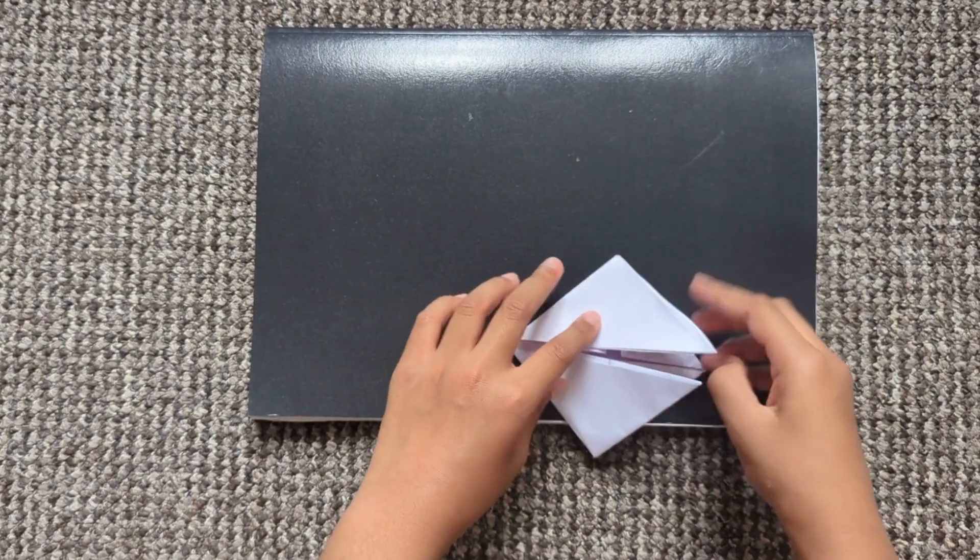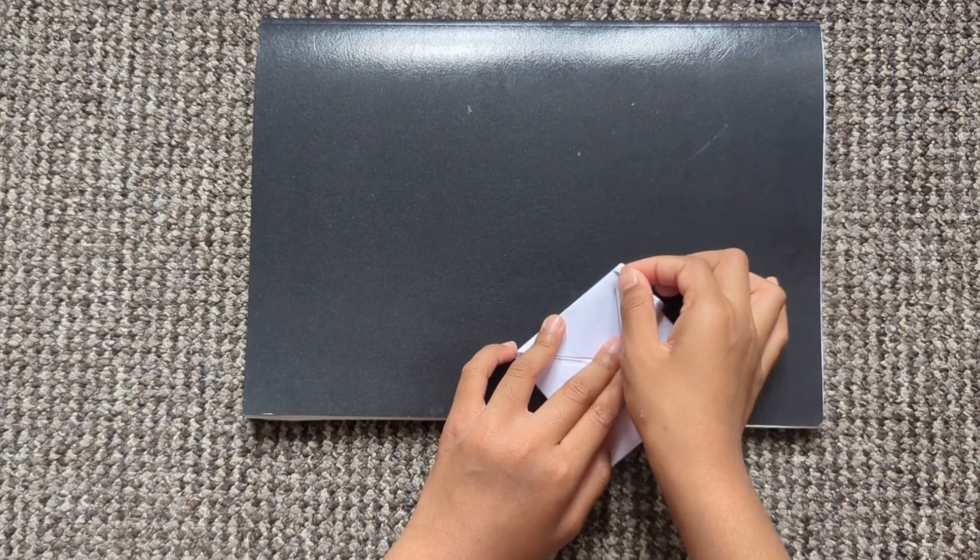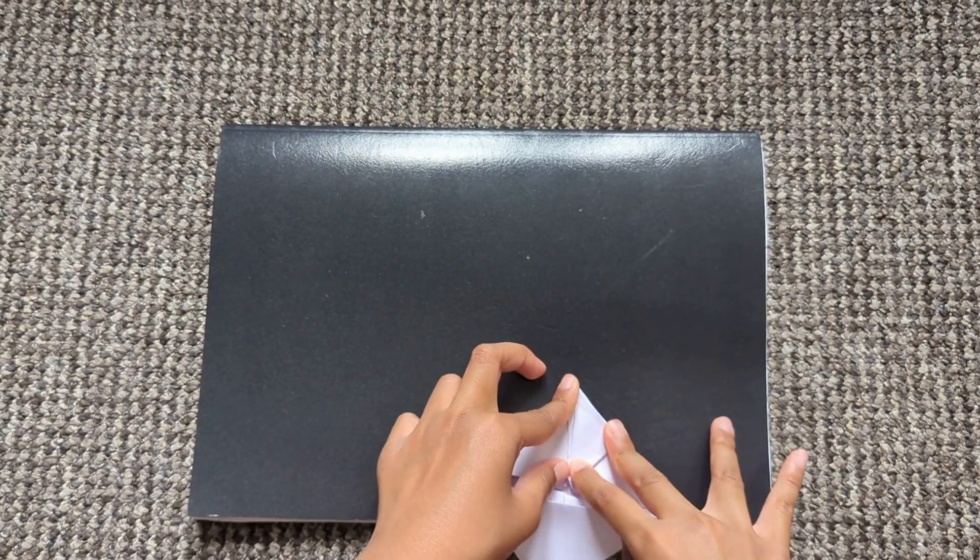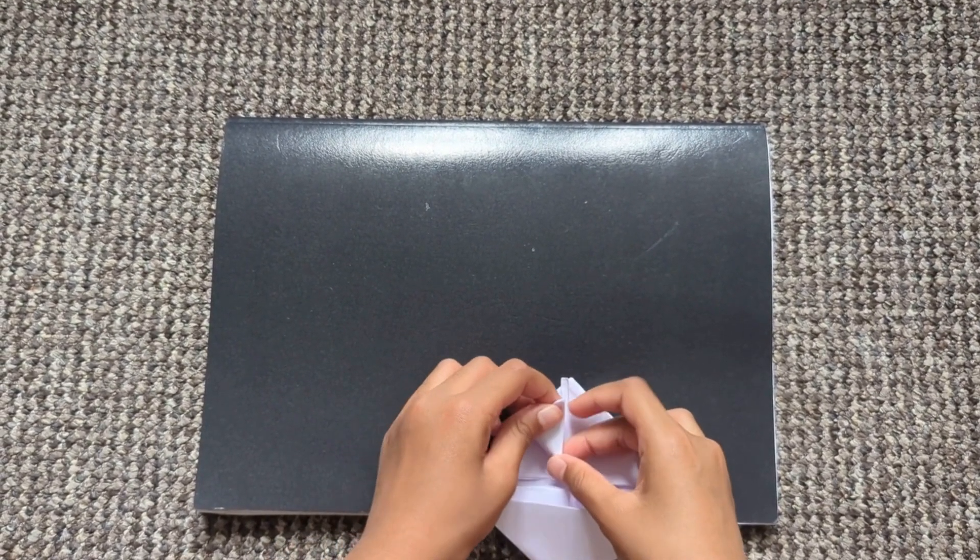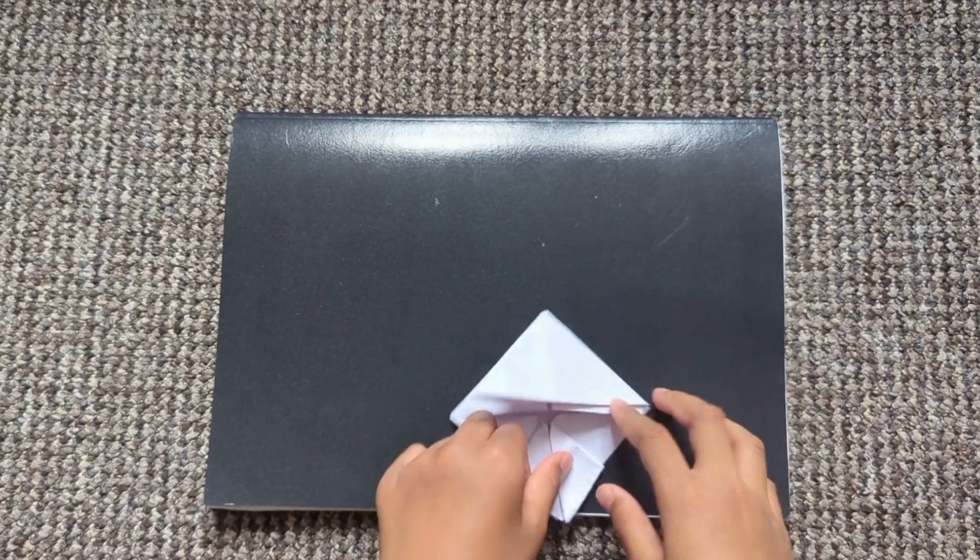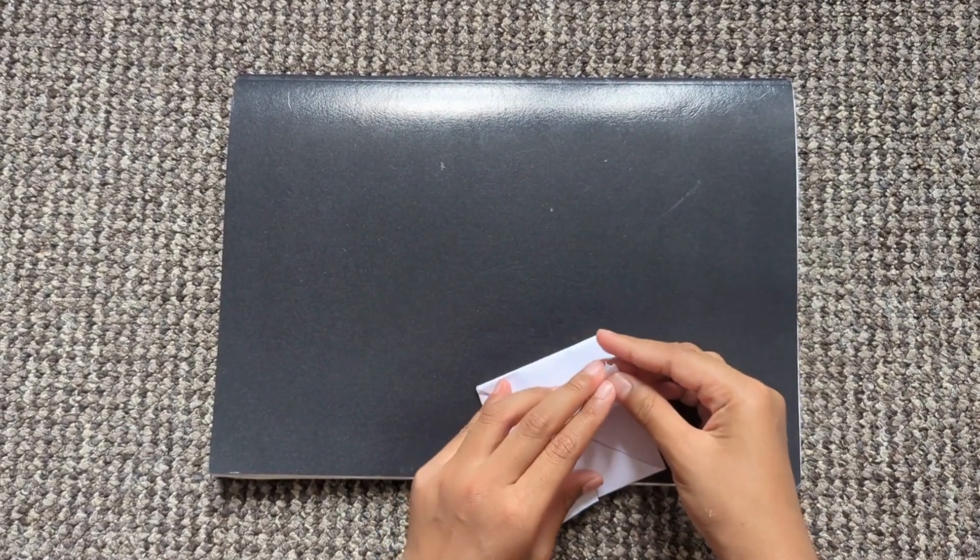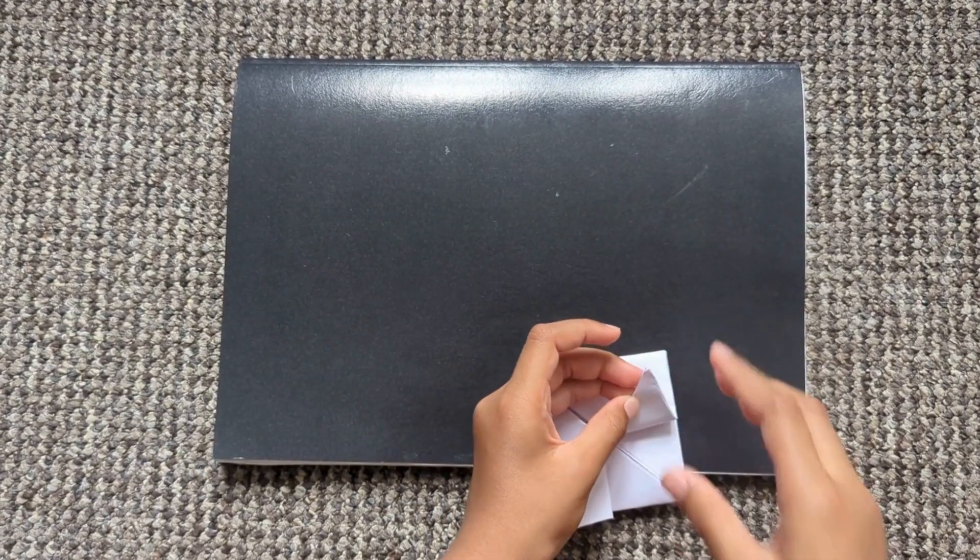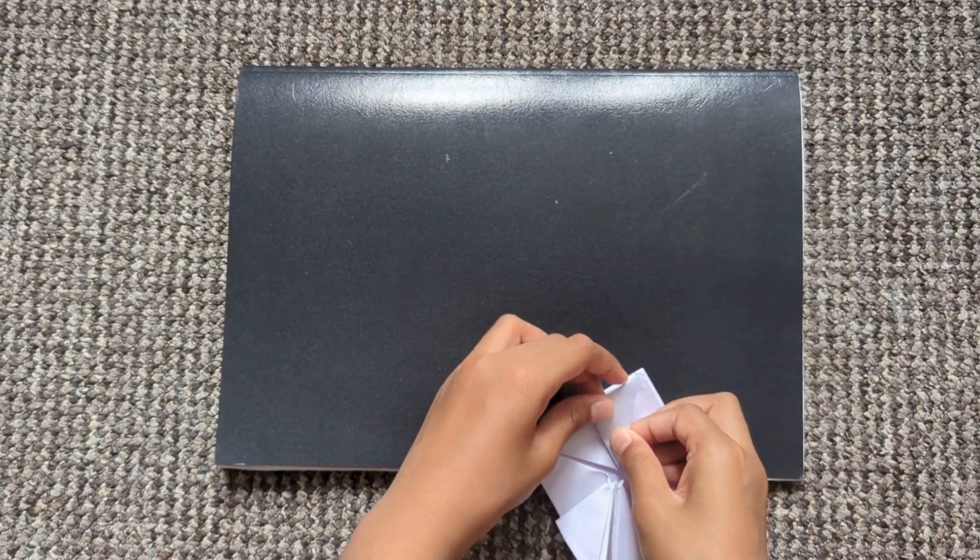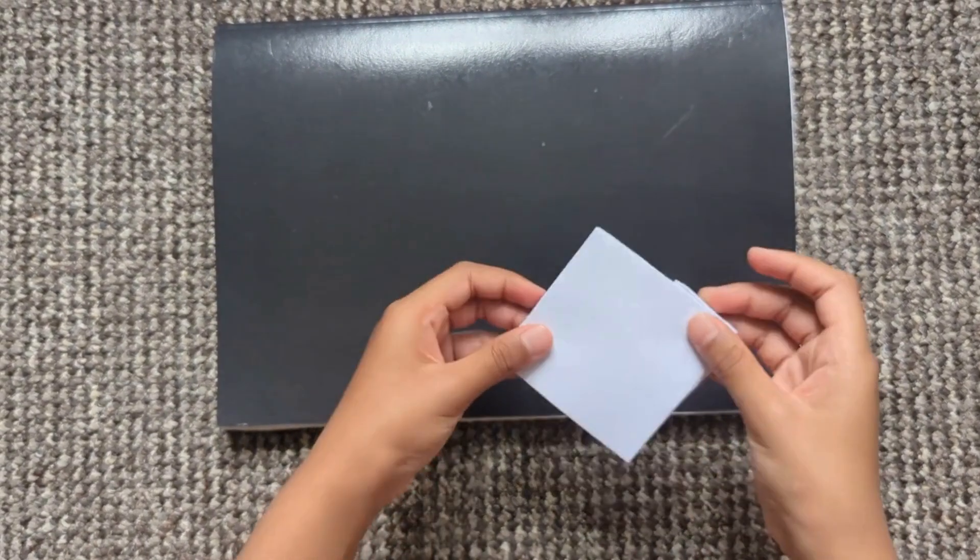Now it's like this. So after that, just fold it into the middle, upwards like this. Do the same on the other side. Now it's like this. Now just turn it over.